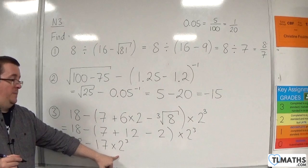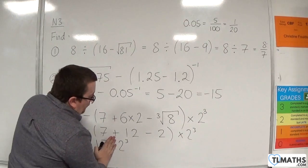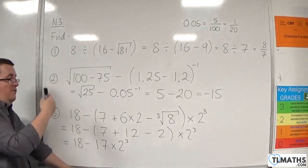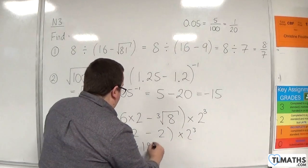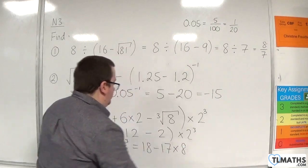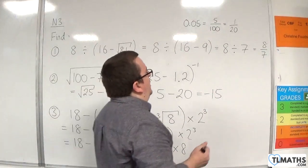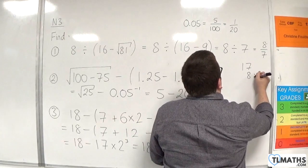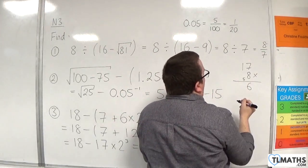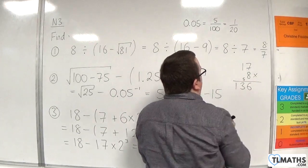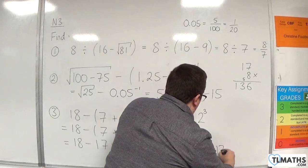Now, 2 cubed has to be worked out first. You can't do 17 times 2 and then cube it. You've got to do the cubing first. So 2 cubed first, then we do the multiplication. 2 cubed is 8, so this is 18 take away 17 times 8. Now, I don't know what 17 times 8 is off the top of my head. So 17 times by 8: 8 sevens are 56, put the 6, carry the 5, 1 times 8 plus the 5 is 13. So it's 136. We've actually got 18 take away 136.